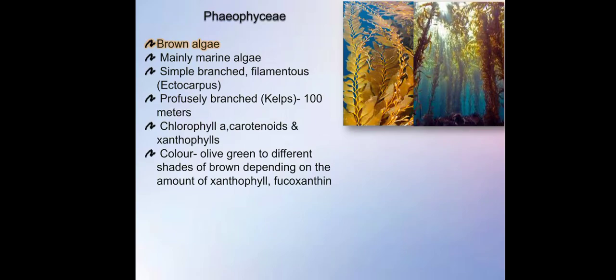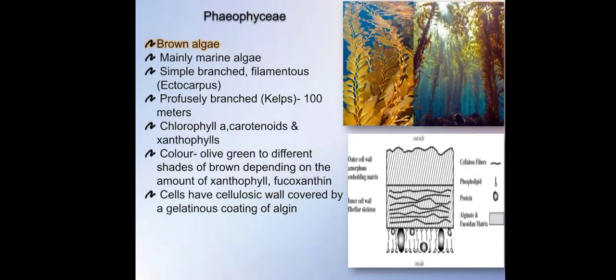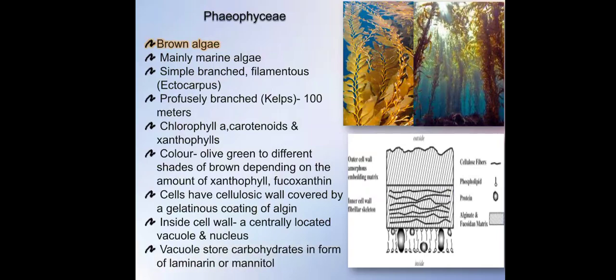Their cells have cellulosic wall covered by a gelatinous coating of algin. Inside the cell wall, a centrally located vacuole and a nucleus are situated. Their vacuoles store carbohydrates in form of laminarin or mannitol.